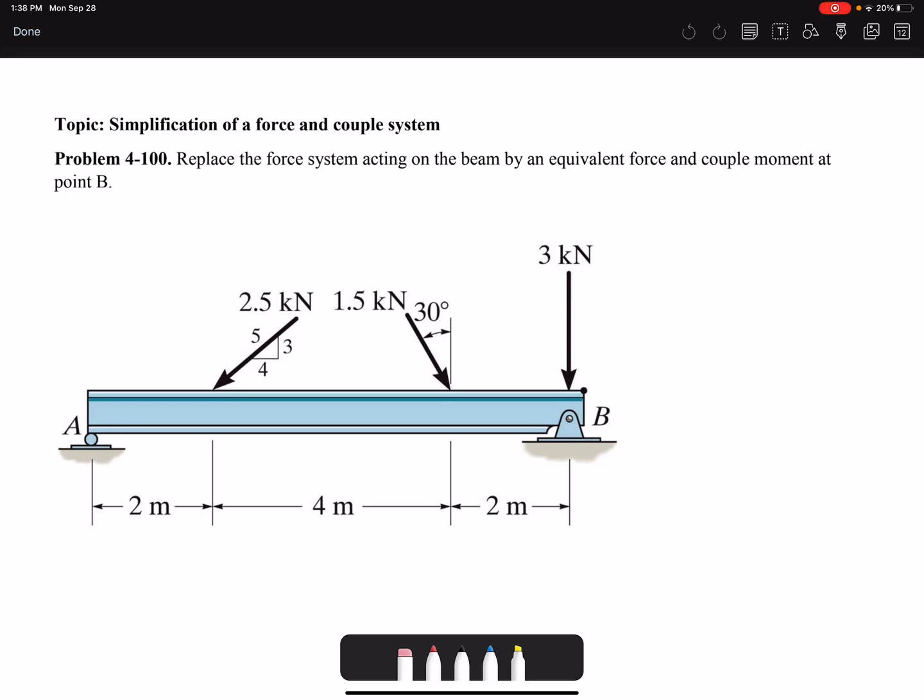So we want to replace our beam with another beam that instead of having all these forces, we're going to have one resultant force and one resultant moment. Here I'm just randomly writing these forces and moments. They could be in any direction and could have any magnitude.